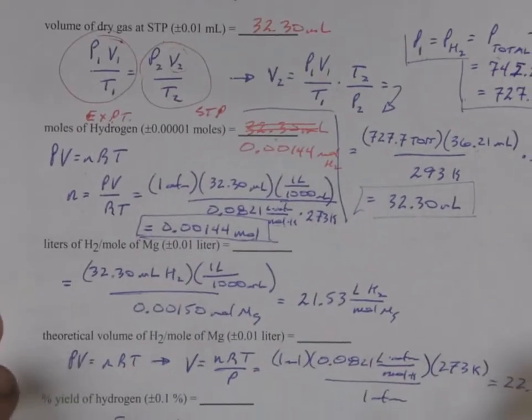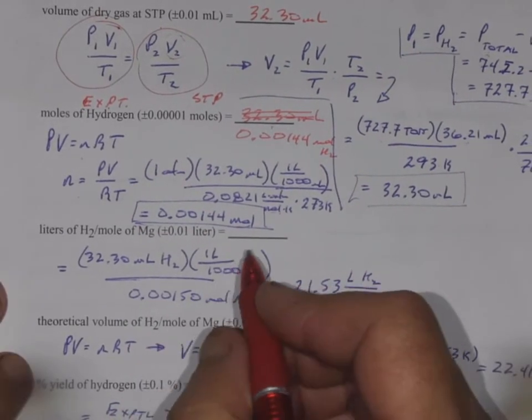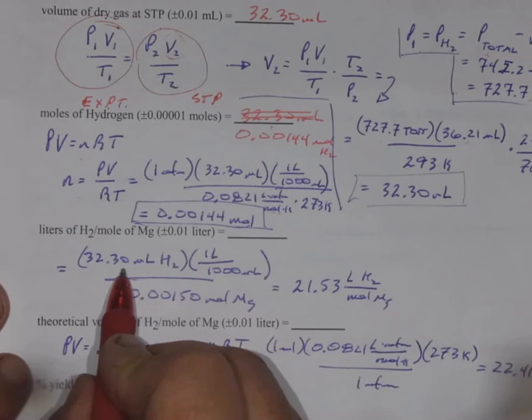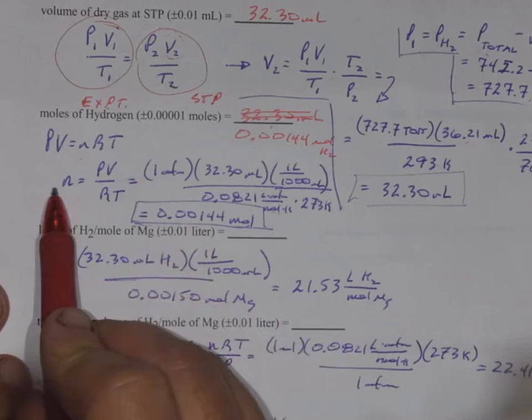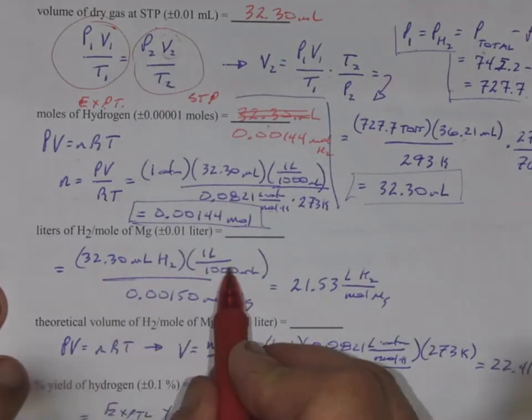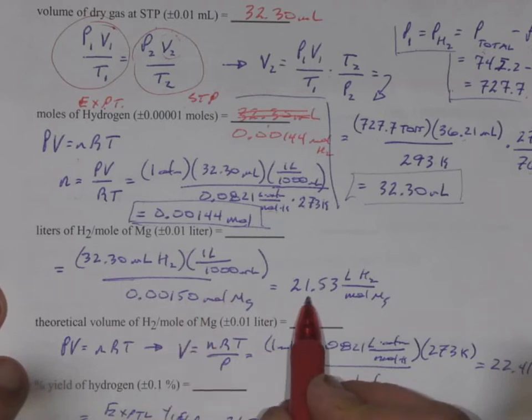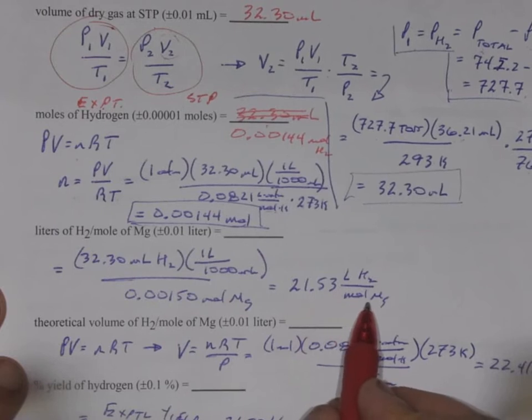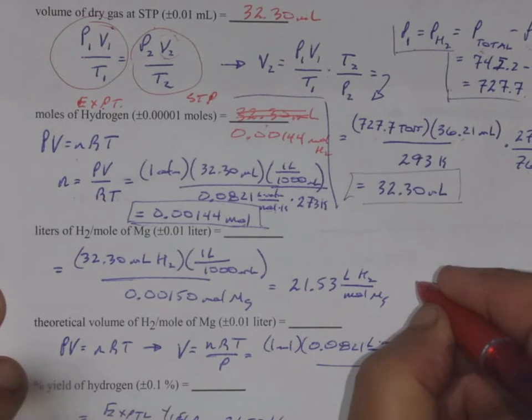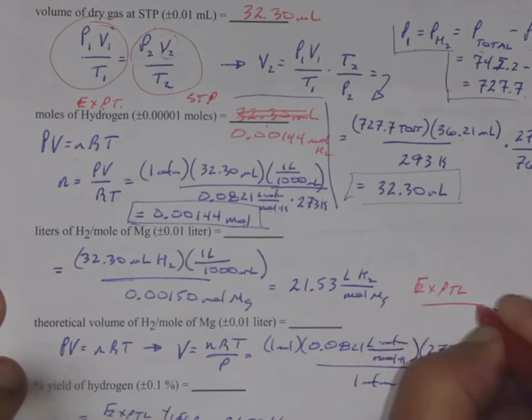Next, we're supposed to calculate the liters of hydrogen per mole of magnesium. And that's just what it says. I'm going to calculate the liters of hydrogen that I calculated my volume of dry gas at STP. Again, converted to liters. I'm going to divide that by the moles of magnesium, which is the very first thing I calculated on this page. And I come up with 21.53 liters of hydrogen per mole of magnesium. So, this is my experimental. And that's what I actually determined in the lab.